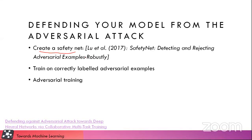You can also say that we can make an adversarial example to fool the safety net as well. Obviously you can do that, and there is a high probability that you break the safety net too. But the thing is, fooling two networks at the same time is a much more difficult task compared to fooling just one.